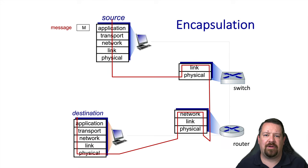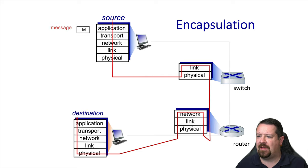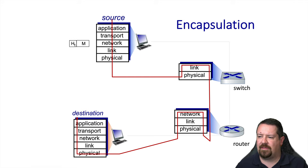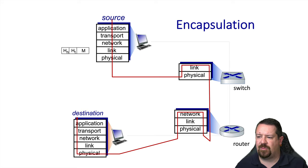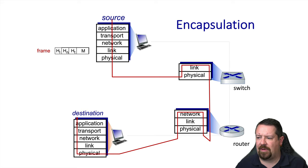Hand in hand with layering is the concept of encapsulation. The message is sent from the source application. It is then encapsulated in a segment at the transport layer with the transport layer header attached. This segment is then transferred to the network layer, which again encapsulates it, this time in a datagram with its own unique header type. This process is repeated at the link layer, which creates a frame by adding its own header and potentially a trailer as well.